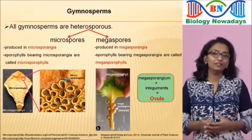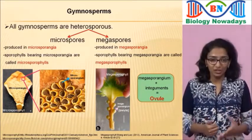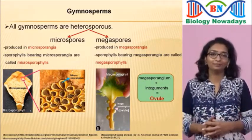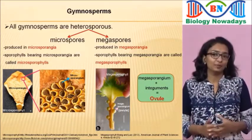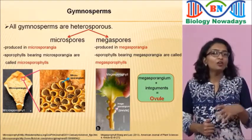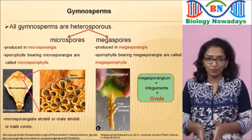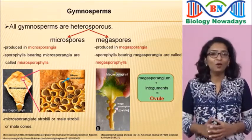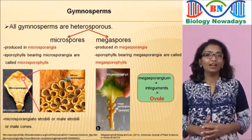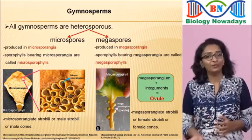In Selaginella, microsporophylls bearing microsporangia and megasporophylls bearing megasporangia were seen in the same strobilus. But in gymnosperms, they are seen in separate strobili. The strobili in gymnosperms are also called cones. The strobili bearing microsporophylls are called microsporangiate strobili, male strobili, or male cones. Those bearing megasporophylls are called megasporangiate strobili, female strobili, or female cones.